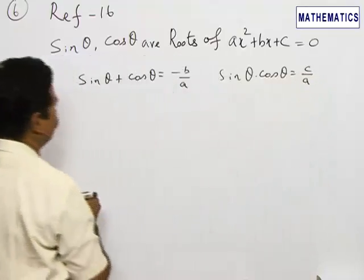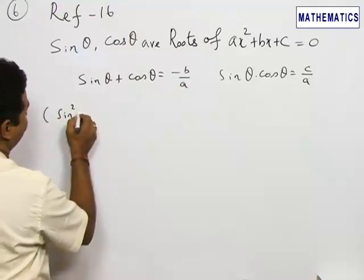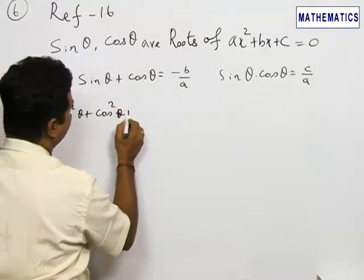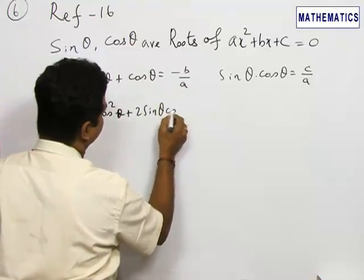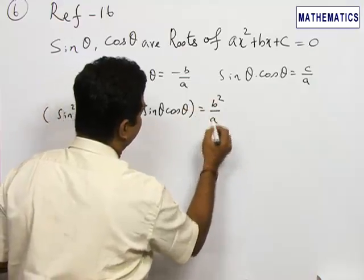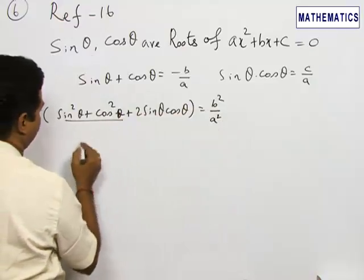I am squaring this. That is, sin² θ + cos² θ + 2 sin θ cos θ = b²/a². Sin² θ + cos² θ, we know that equals 1.